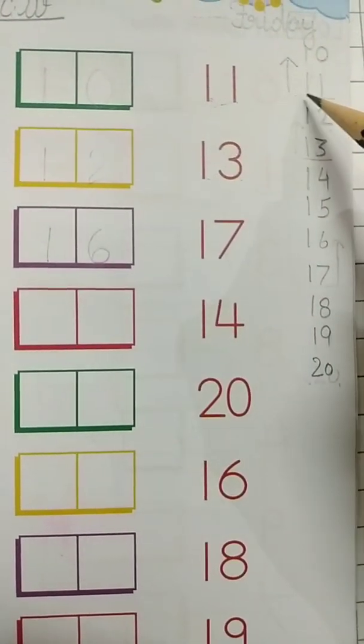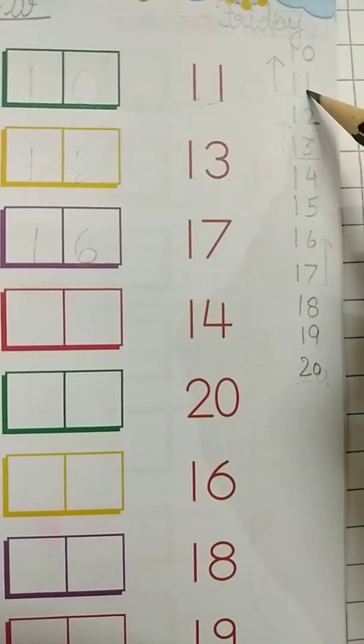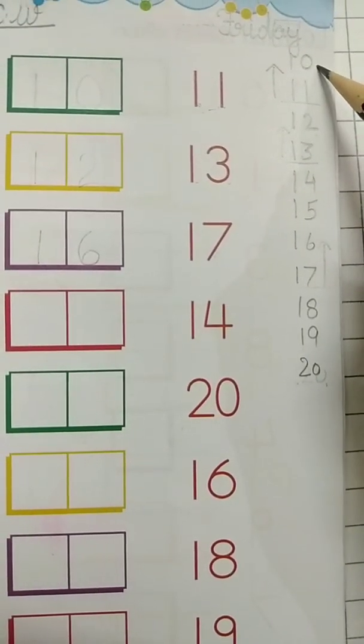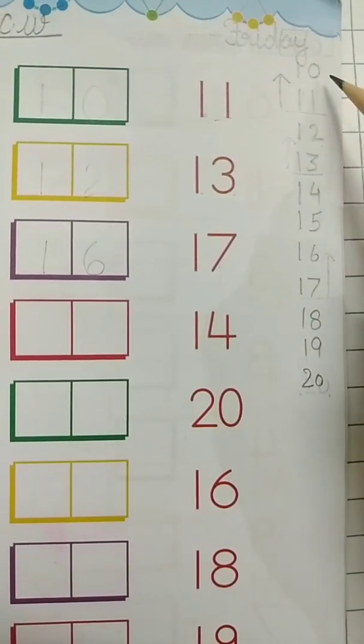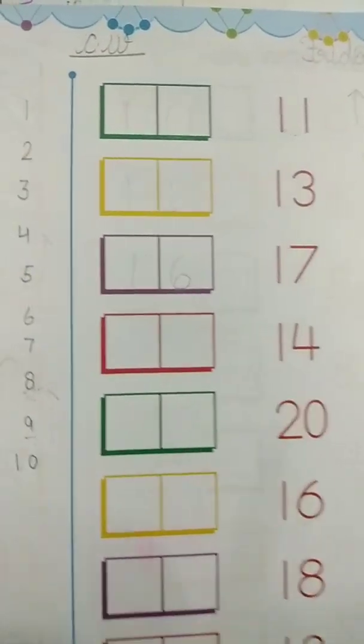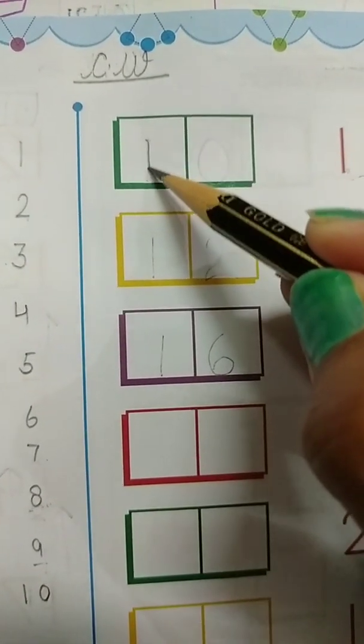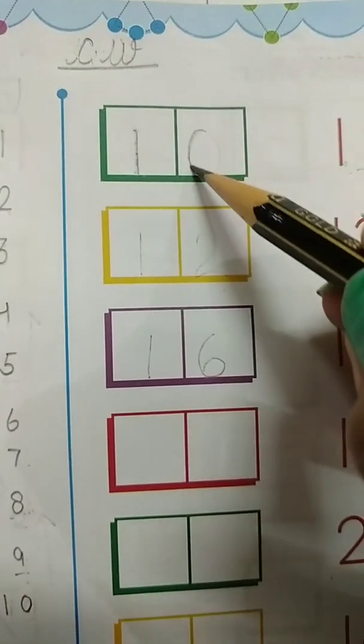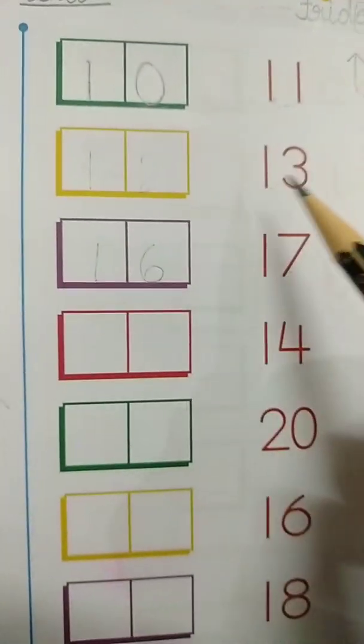So to find out what comes before 11, I have to move one step back. And if I move one step back I get 10. It means 10 comes before 11.